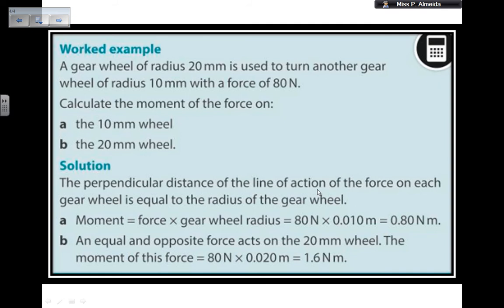Again, perpendicular distance of the line of action is going to be equal to the radius of the gear wheel, so the moment is the force times the radius, so 80 times, and then you have 0.010, because you convert the millimeters into meters. So this will give you a moment of 0.80 newton meters.